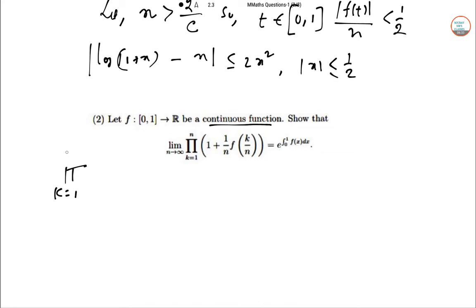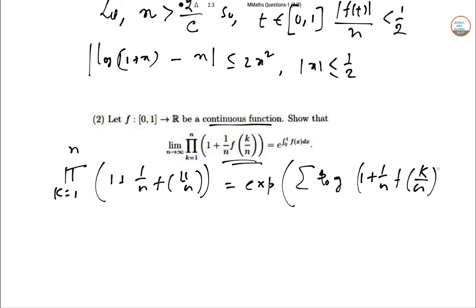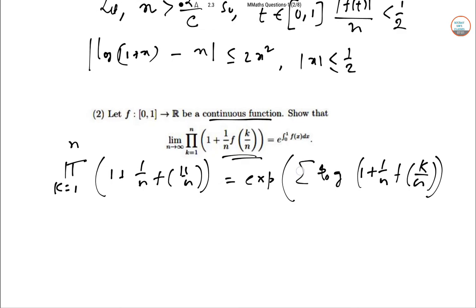So this represents the product in this case. So product K equal to 1 to N. So 1 plus 1 by N F of K by N this thing is equal to e to the power or exponential log 1 plus 1 by N F of K by N.